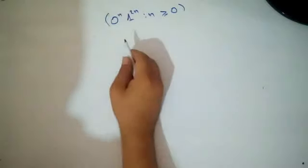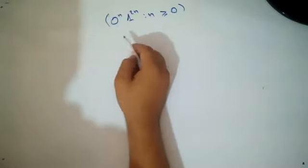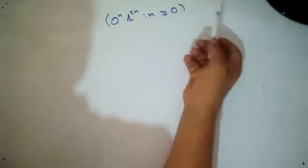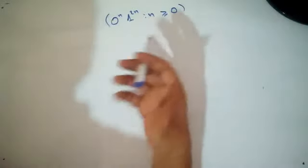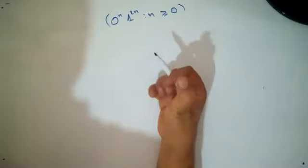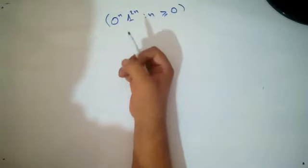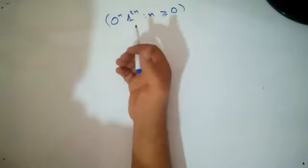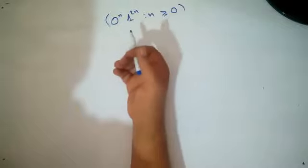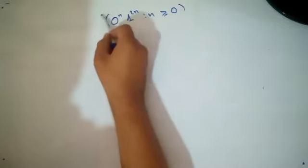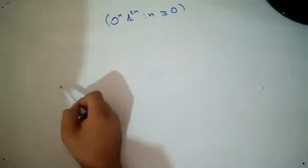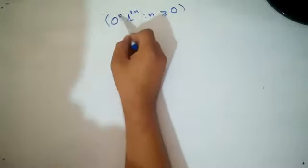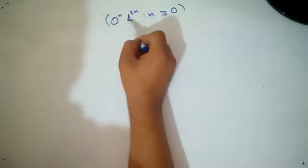Hello again. In this video I will show you how to create a pushdown automaton for a given context-free language. Here I have this context-free language: zero to the power n and one to the power two n.